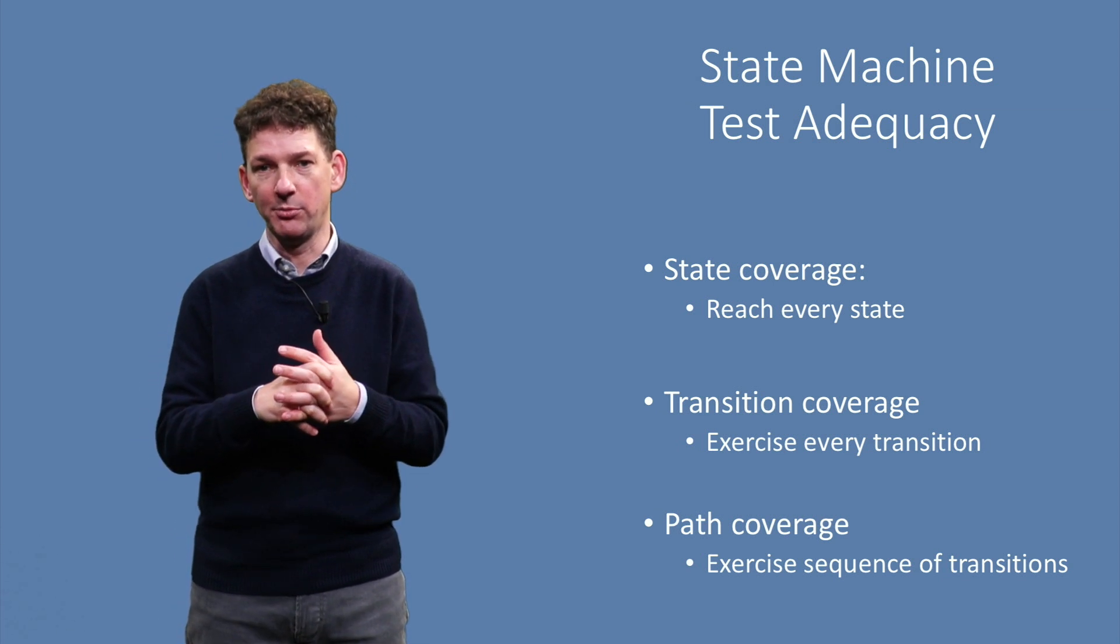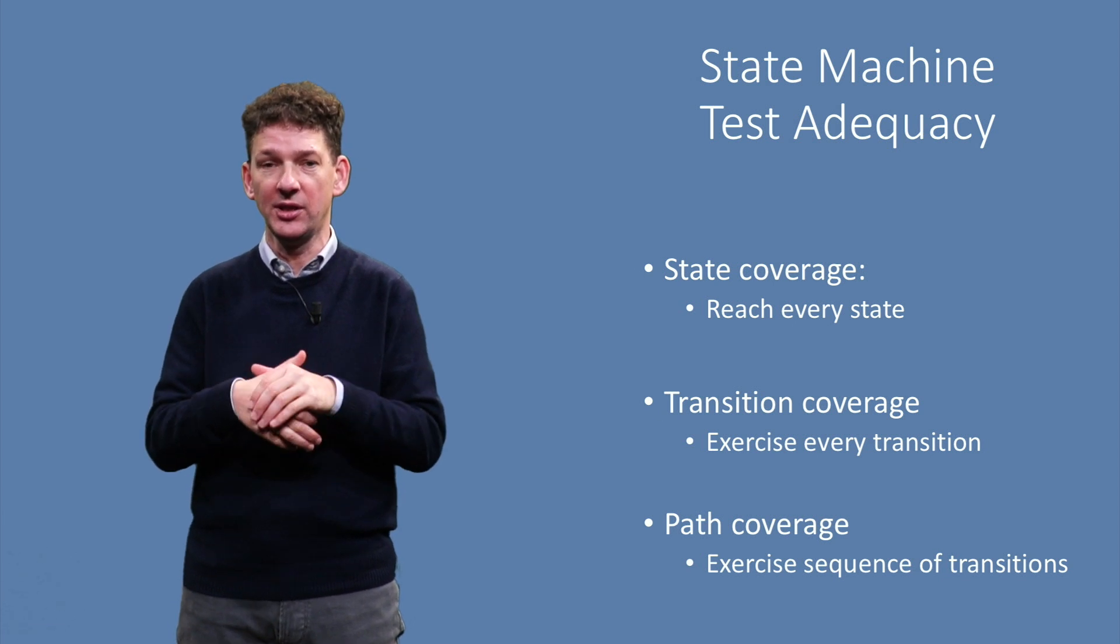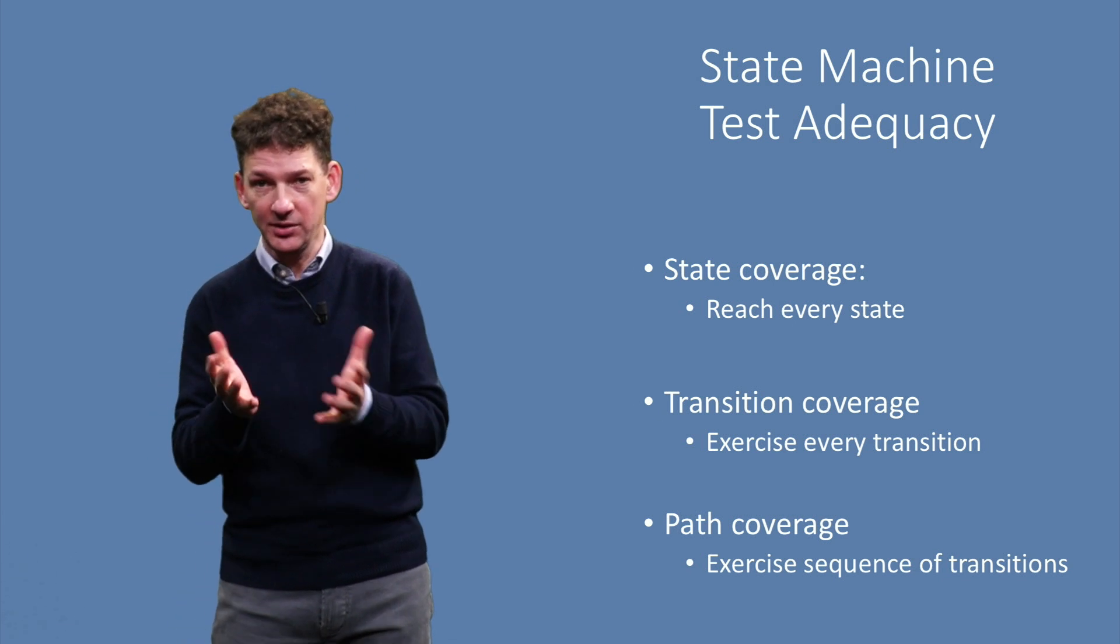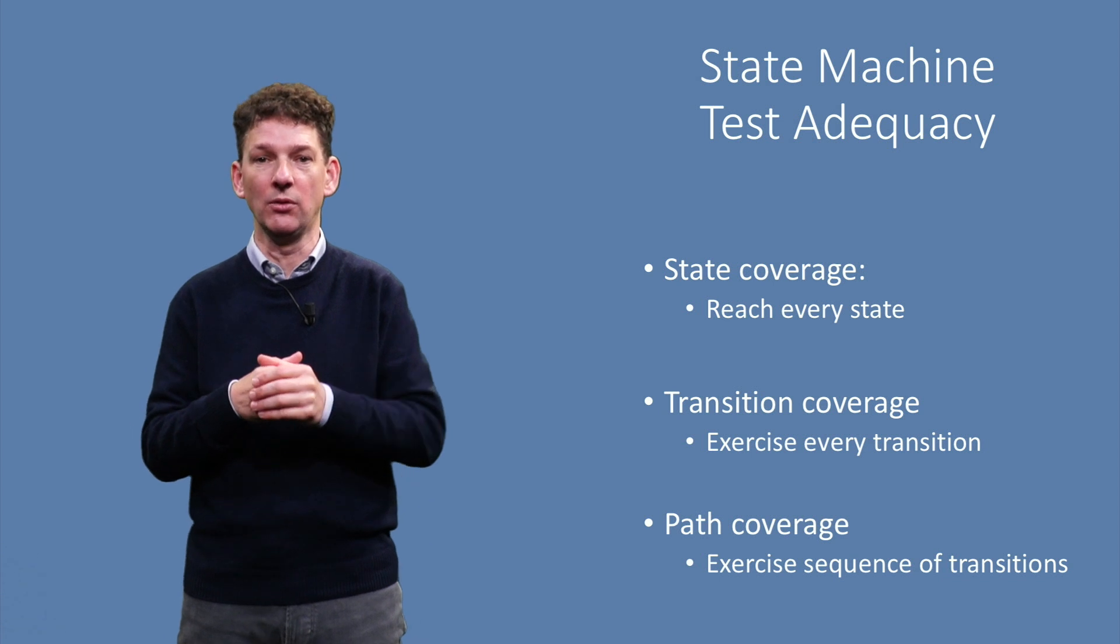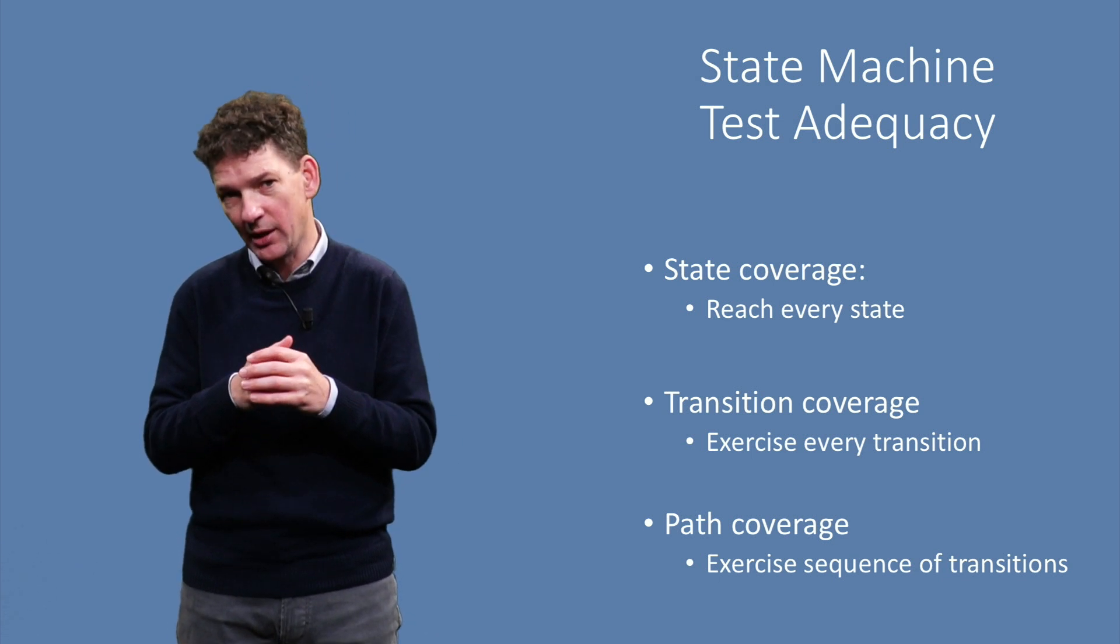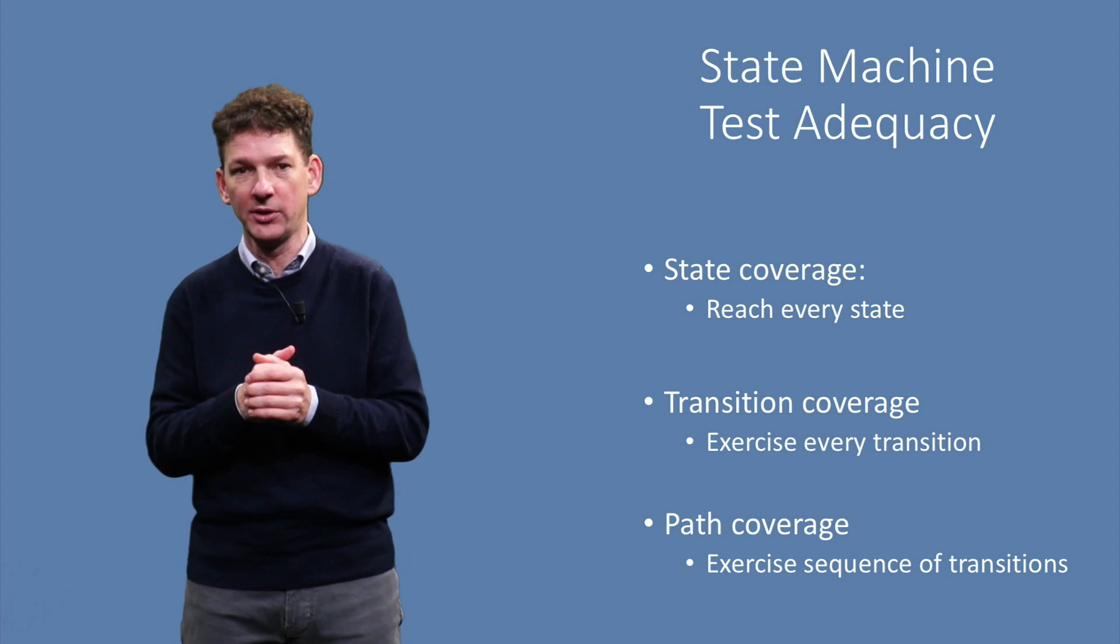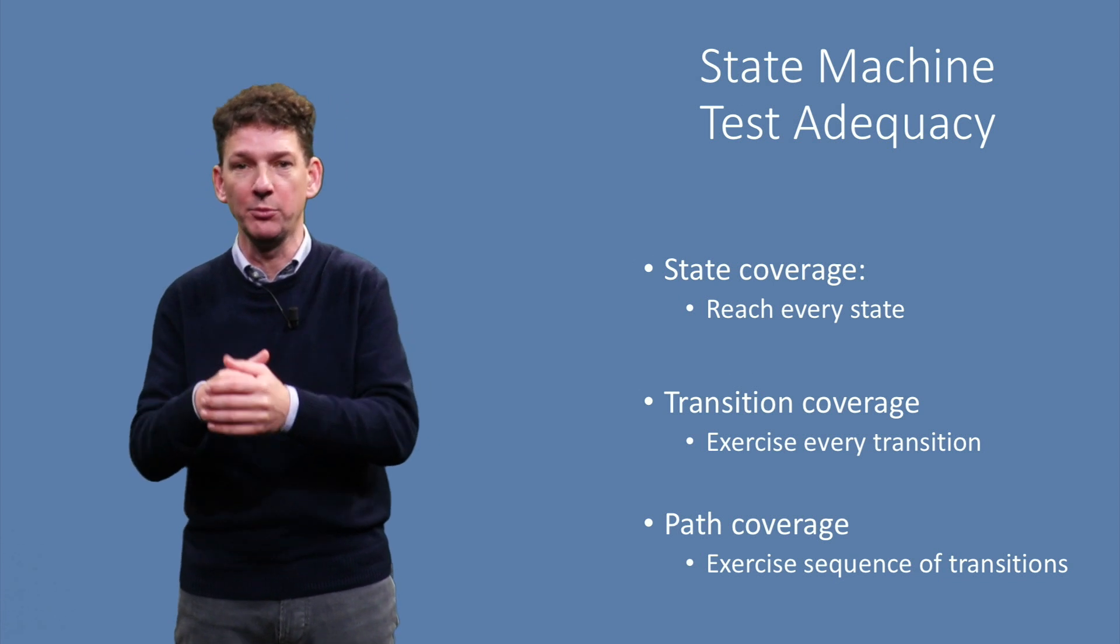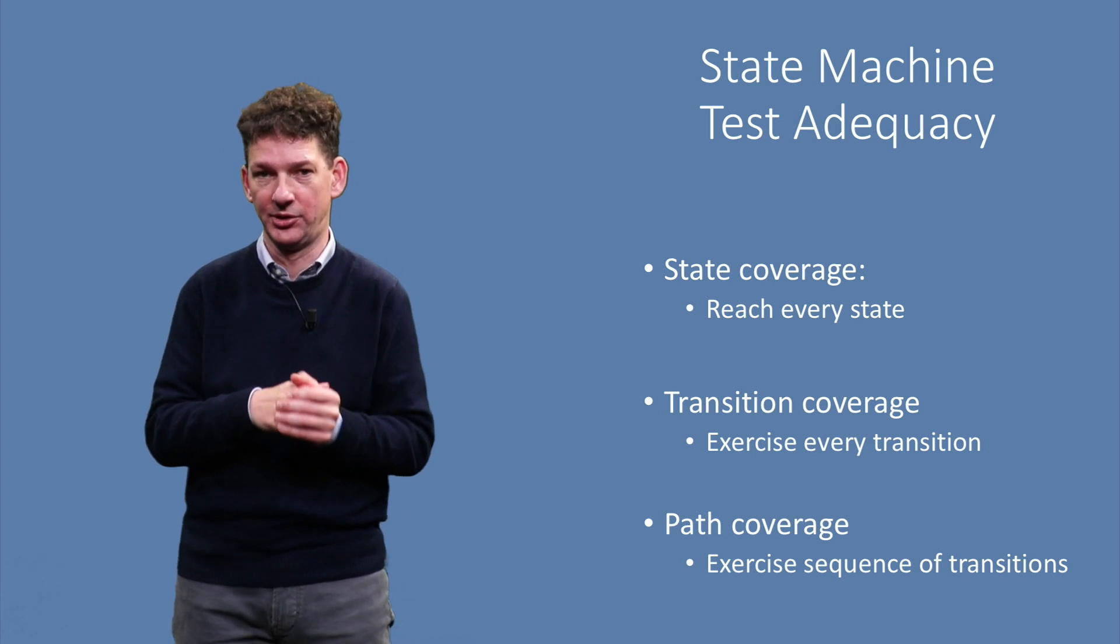Transition coverage is a bit stronger, which insists that every transition is covered. If this is the case, then automatically all states are covered as well. This should remind you of branch and statement coverage, for which you also get full statement coverage if you insist on branch coverage.